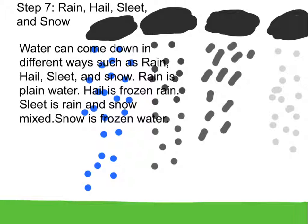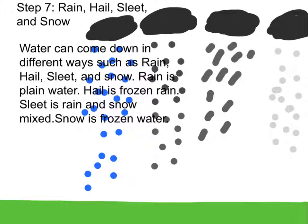Step 7: Rain, hail, sleet, and snow. Water can come down in different ways, such as rain, hail, sleet, and snow. Rain is plain water. Hail is frozen rain. Sleet is rain and snow. Snow is frozen water.